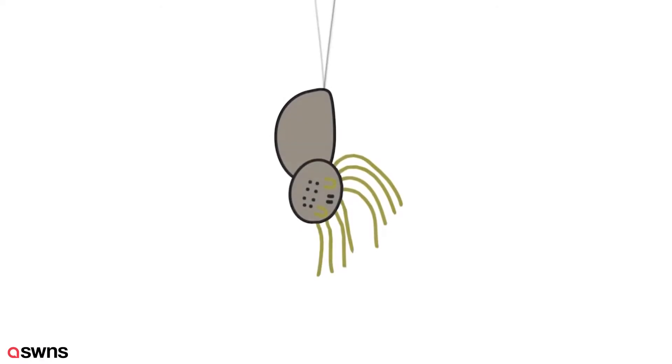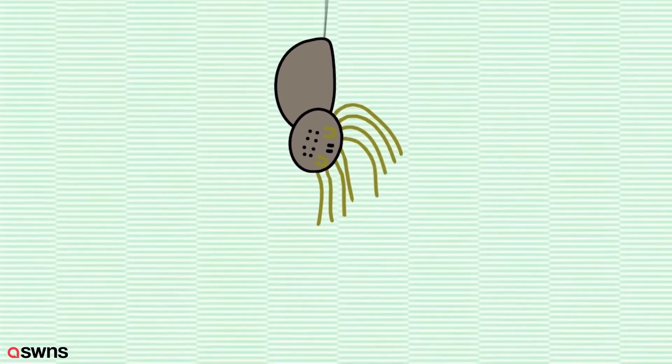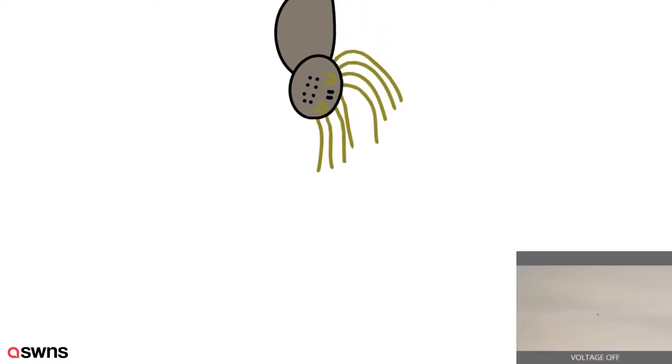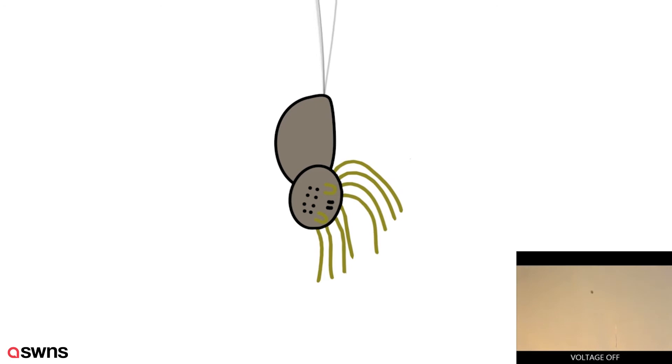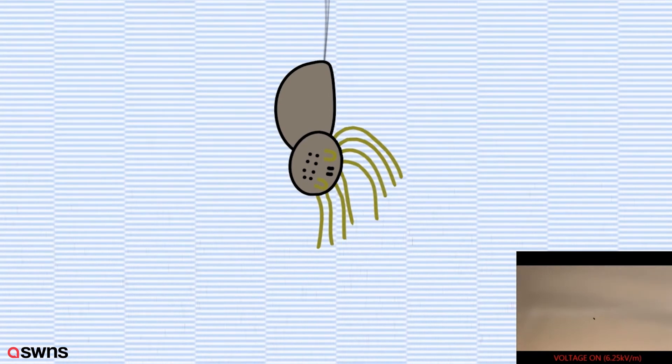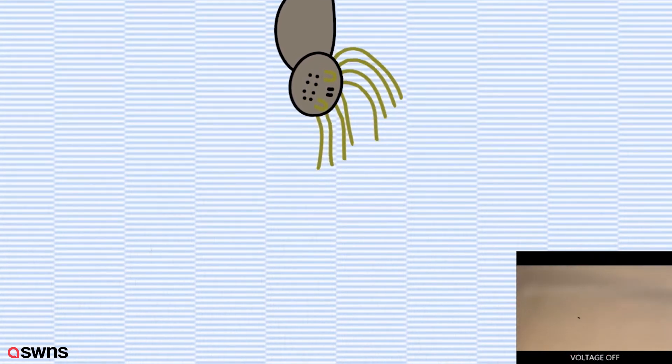Furthermore, once the spider was aloft its altitude could be controlled by turning the electric field on and off. This demonstrates that spiders can balloon using electrostatic forces alone, but in all likelihood they would use a combination of both wind and electricity to balloon in their natural environments.